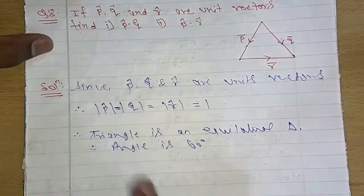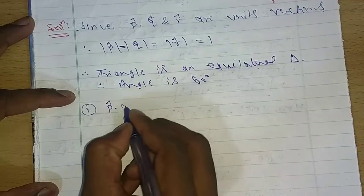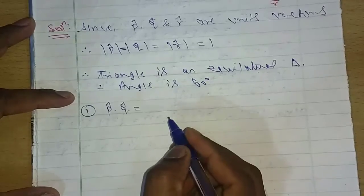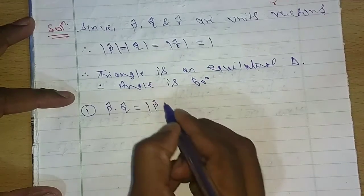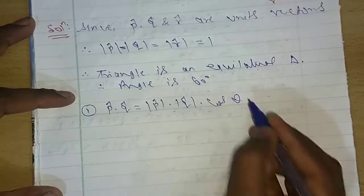So now we will find p cap dot q cap. We will start with first one here. P cap dot q cap is equal to, by definition we know that, p cap magnitude times q cap magnitude times cos theta.